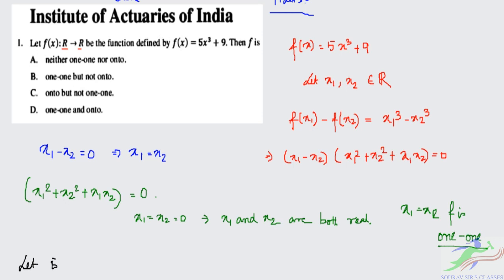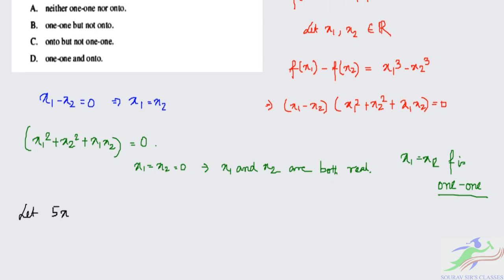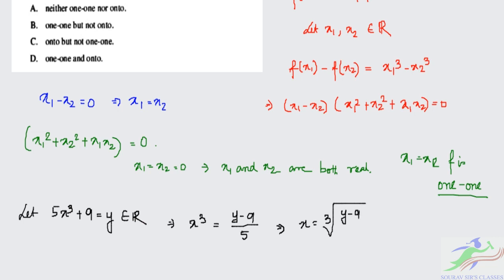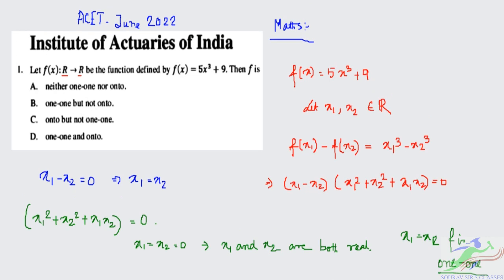Now, to check onto: let f(x) = 5x³ + 9 = y, where y belongs to real space R. Then x³ = (y - 9)/5, so x = cube root of (y - 9)/5. From here you can see that f is onto. Checking with the options, it matches option D: the function f is one-to-one and onto.